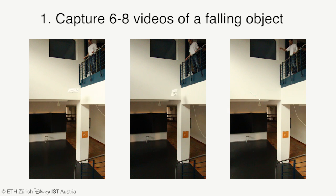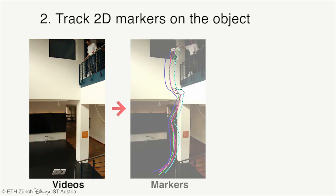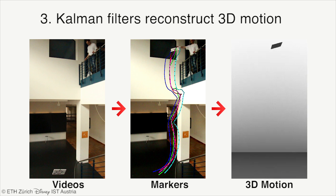We first capture 6 to 8 videos of a falling object and track markers on the object. Then, we apply a novel Kalman filter-based approach to estimate the 3D trajectories and parameters of an omnidirectional aerodynamic model.